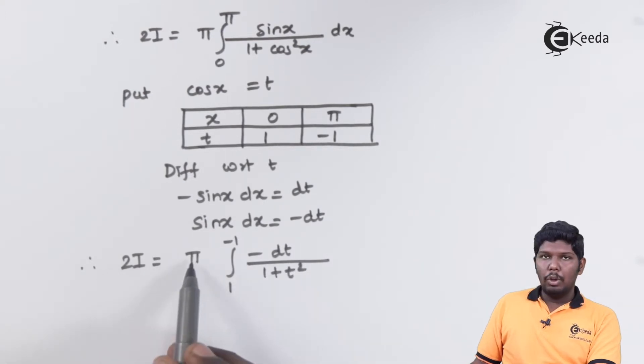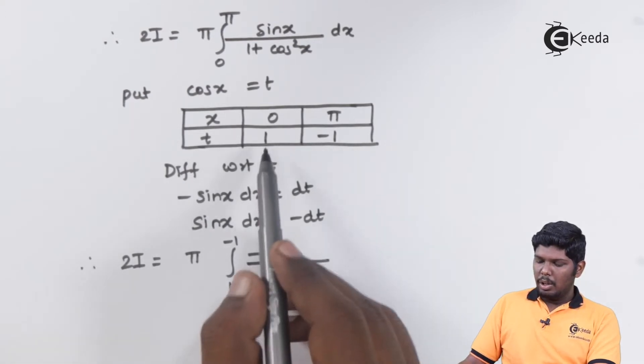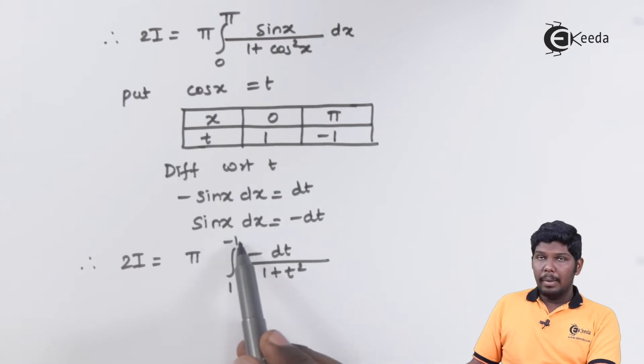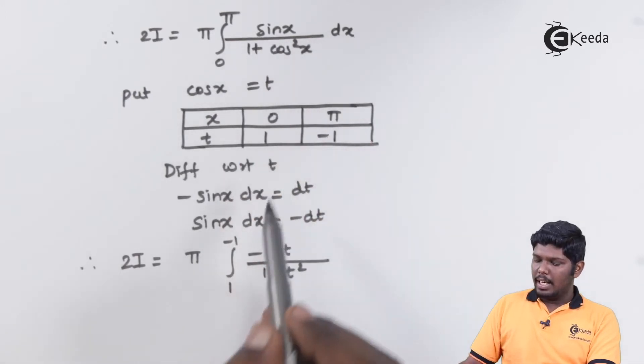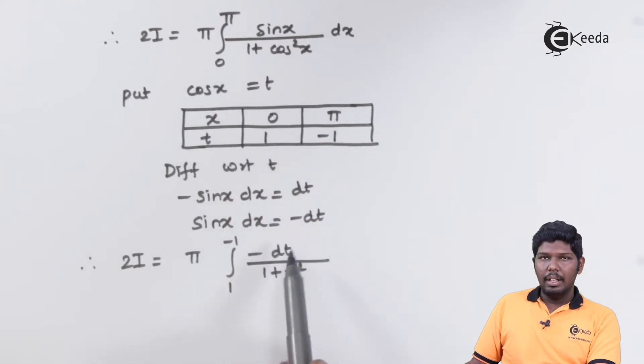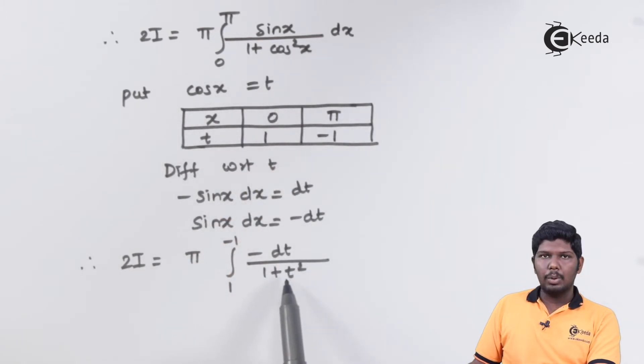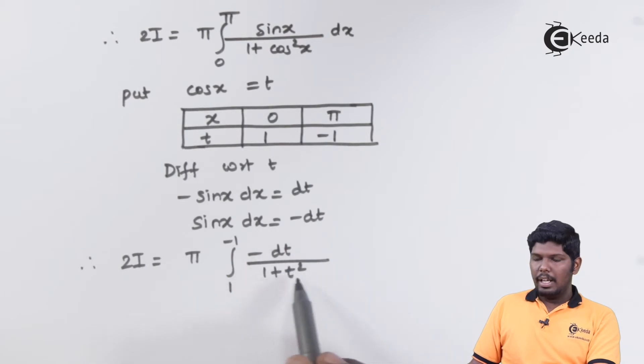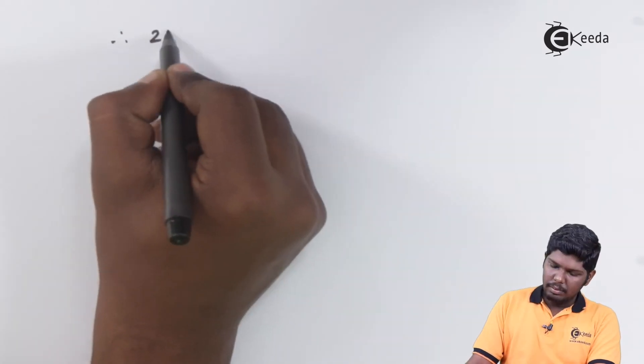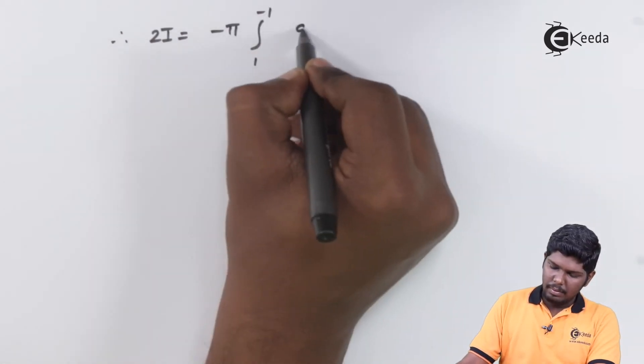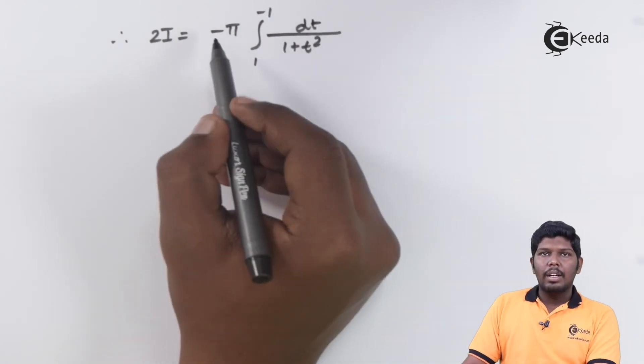Therefore, we have 2i is equal to pi integral, lower limit is 1, upper limit is minus 1, sin x dx is minus dt upon 1 plus cos x is t. Therefore, cos square x will become t square. Taking this minus sign outside the integral, this will give you minus pi integral 1 to minus 1, dt upon 1 plus t square.